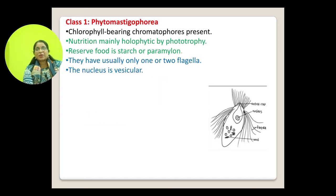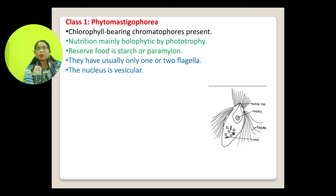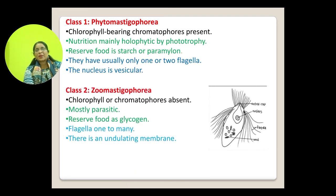Class Phytomastigophora has chlorophyll-bearing chromatophores, so nutrition is mainly holophytic or phototrophic, and reserve food is starch or paramylon. They usually have only one or two flagella, and the nucleus is vesicular.